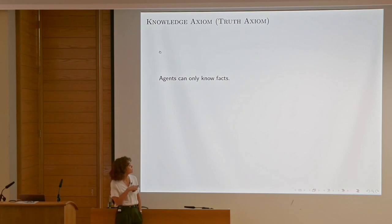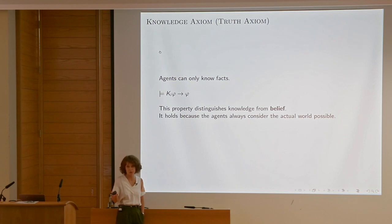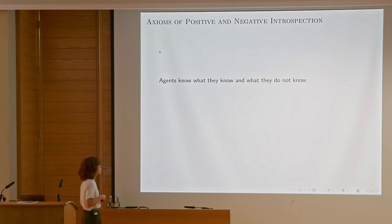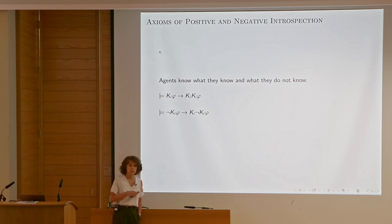Agents can only know facts — if I know that φ, then φ holds. We can postulate this about natural language knowledge; this is how we use the word 'know.' Agents also know what they know and what they don't know: positive introspection — if I know φ, I know that I know φ; and negative introspection — if I don't know φ, then I know that I don't know φ.